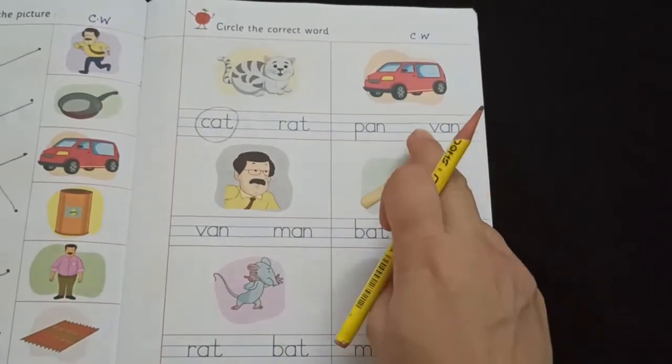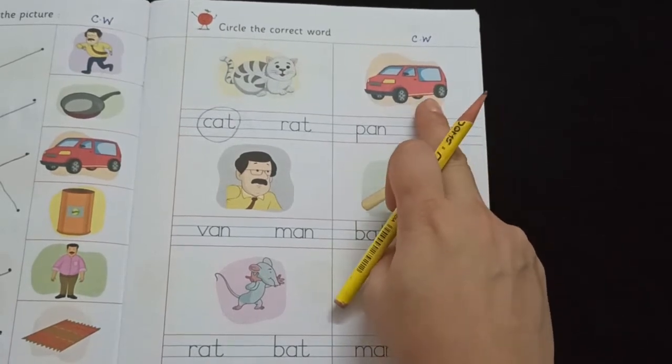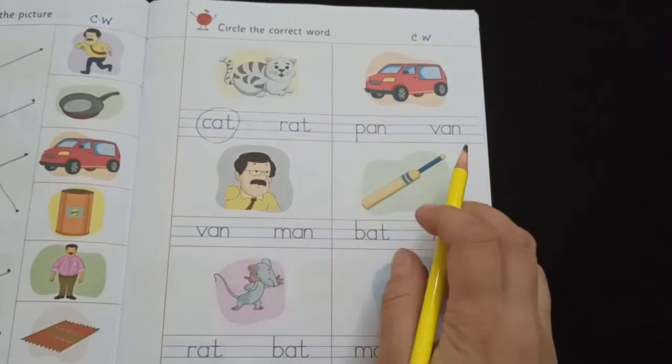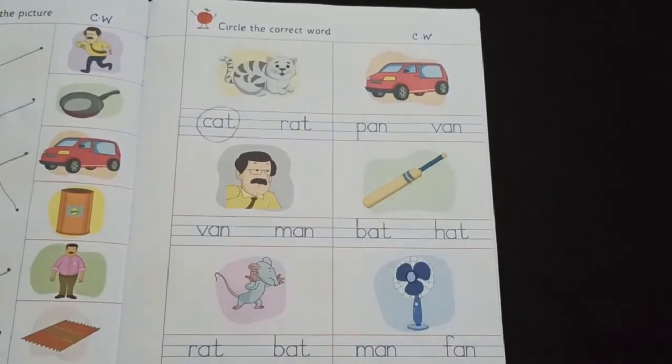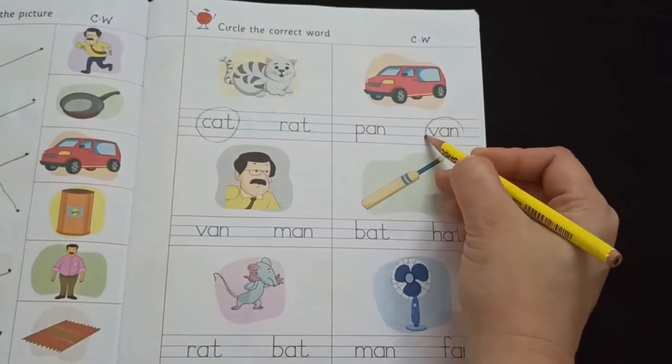Next. See the picture. Picture is of a van. P-A-N, pan. V-A-N, van. Which one is correct? Yes. This one. Put a circle.